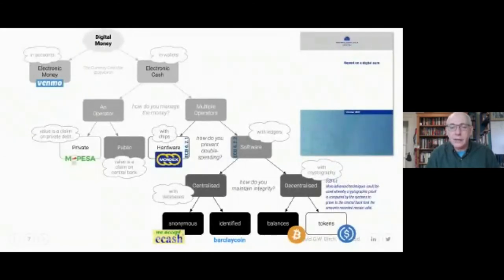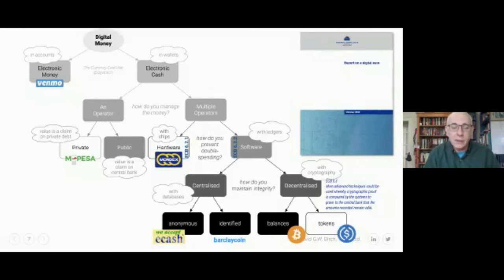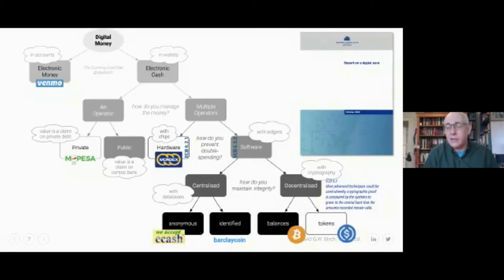Let me use some real examples. For a single private operator running the system, a good example is M-Pesa in Kenya. For the hardware approach, we have Mondex from the UK. For a decentralized solution, we have tokens. For the history of electronic cash, I've put a few examples on the chart — and Consult Hyperion, a company I helped found, was the consultant for both M-Pesa and Mondex.